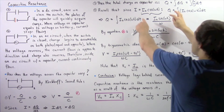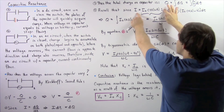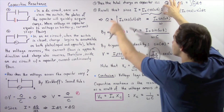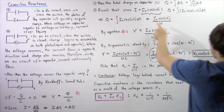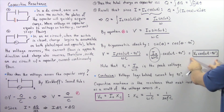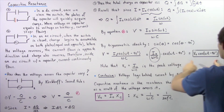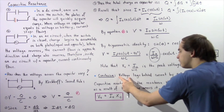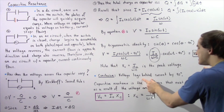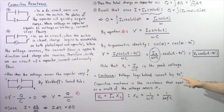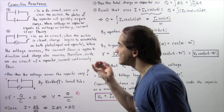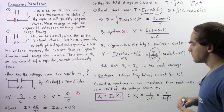Comparing the equation for electric current, I = I₀·cos(ωt), with the voltage across the capacitor, V = V₀·cos(ωt − 90°), we can conclude that the voltage lags behind the electric current by 90 degrees. Now let's define what capacitive reactance is.